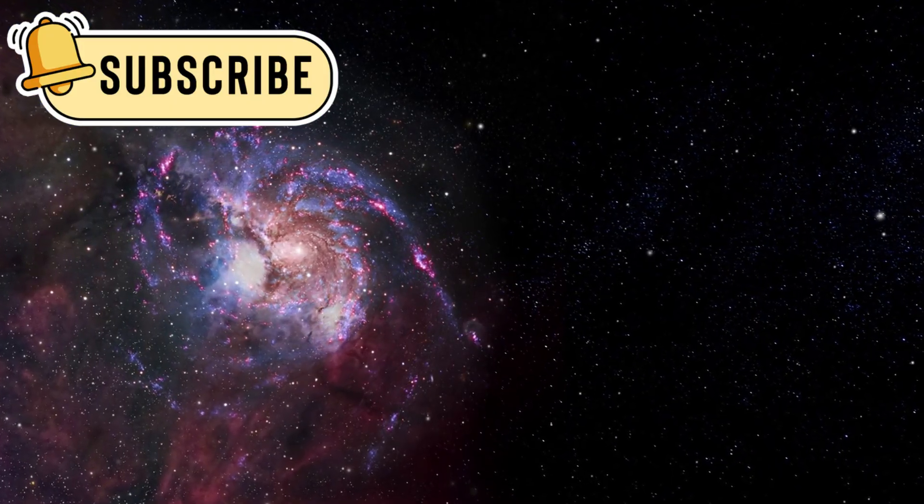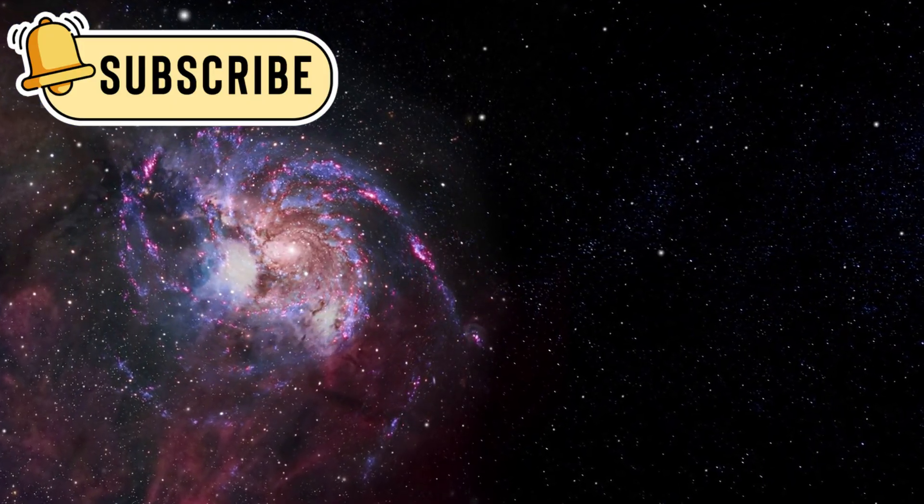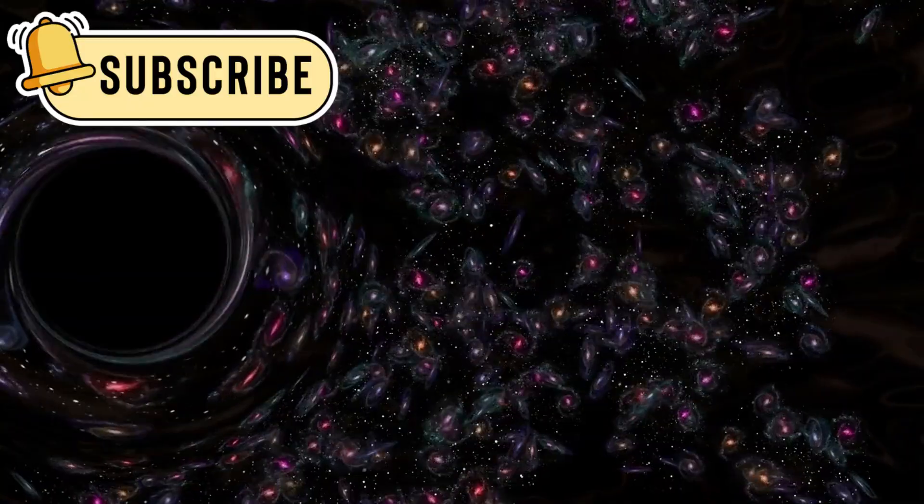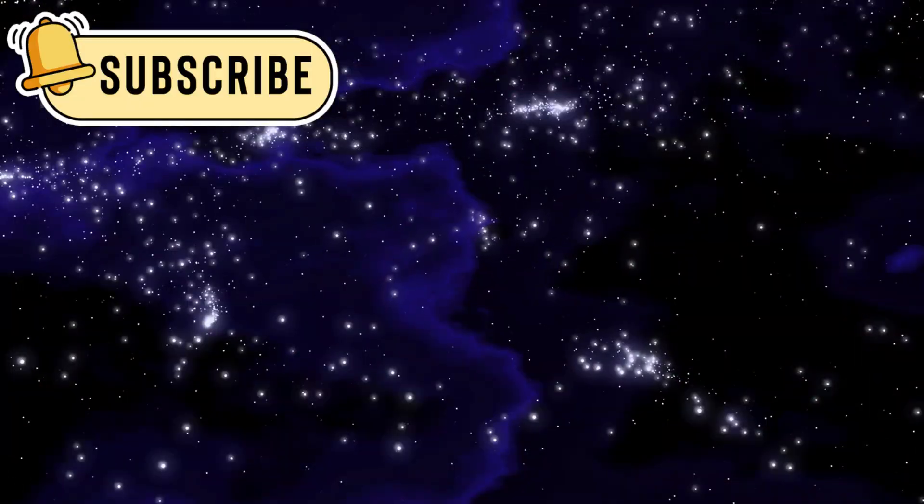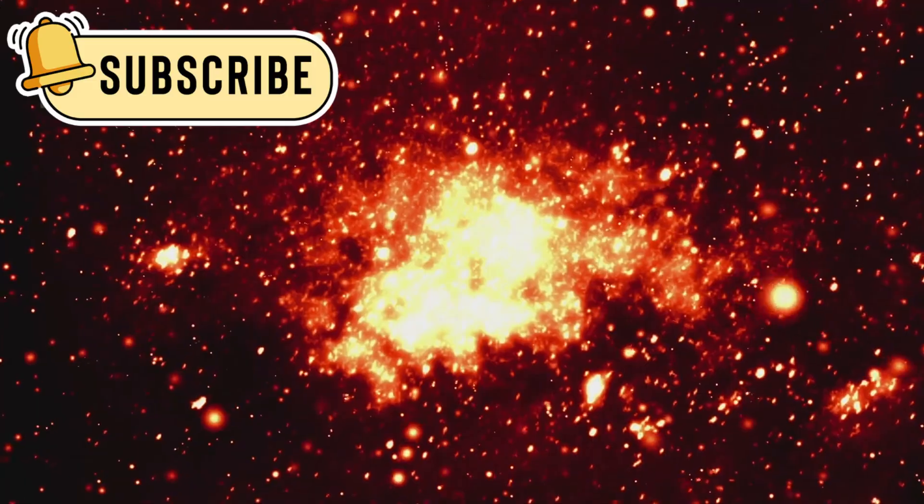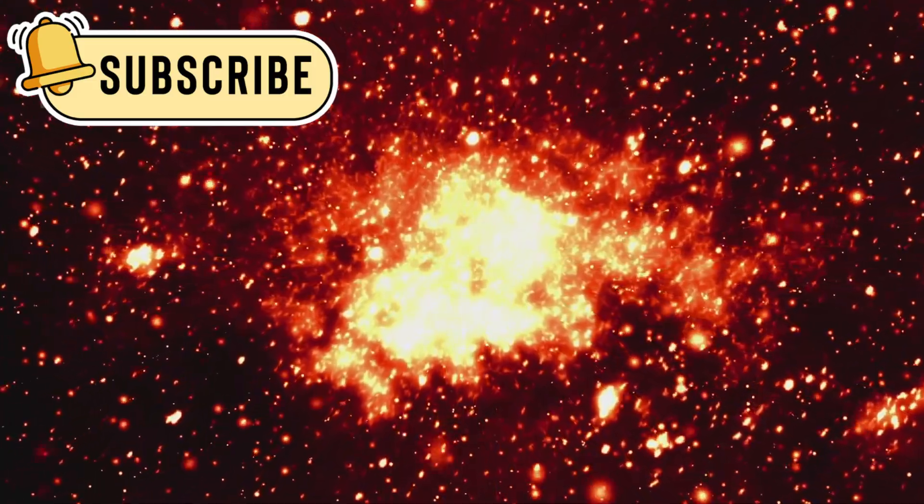Some galaxies appeared too mature for their time. They formed only a few hundred million years after the universe began. Their shapes were complex and organized. They contained heavy elements and massive black holes. According to current models, this should not be possible.